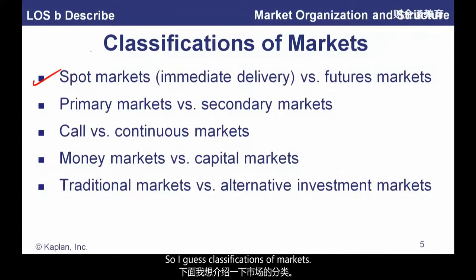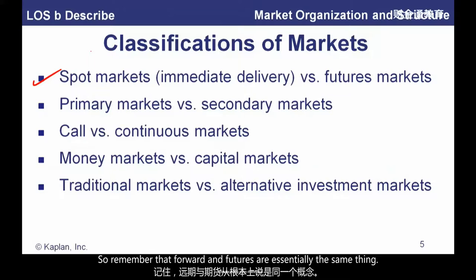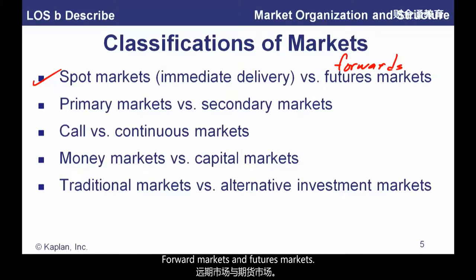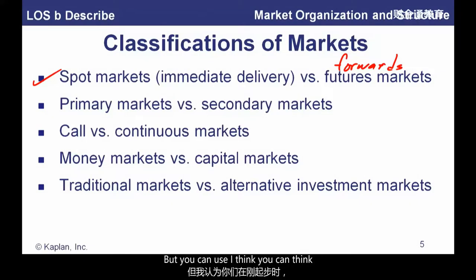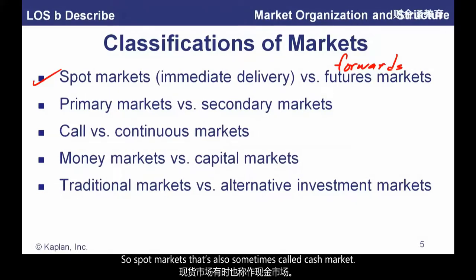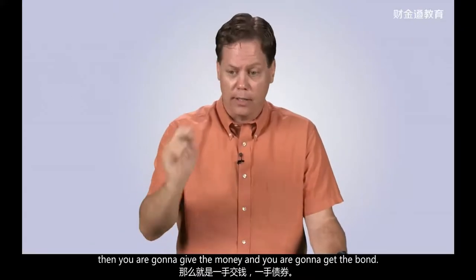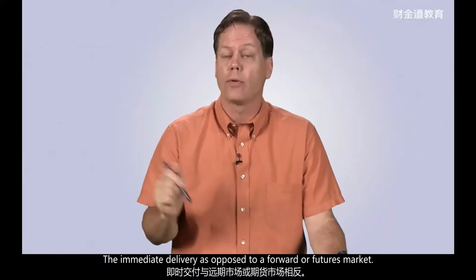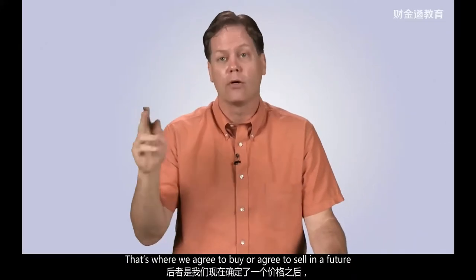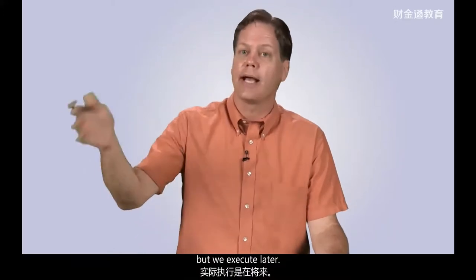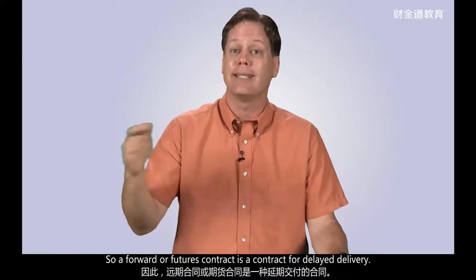A few more classifications of markets. Spot markets versus futures markets — we could also call this spot versus forward. Forward and futures are essentially the same thing: futures are exchange-traded and forwards are over the counter. Spot markets — also called the cash market — are the market for immediate delivery. If you buy a bond in the spot market, you give them the money and you get the bond right away. A forward or futures contract is a contract for delayed delivery — you agree to buy or sell in the future at a price determined today, but execute later.